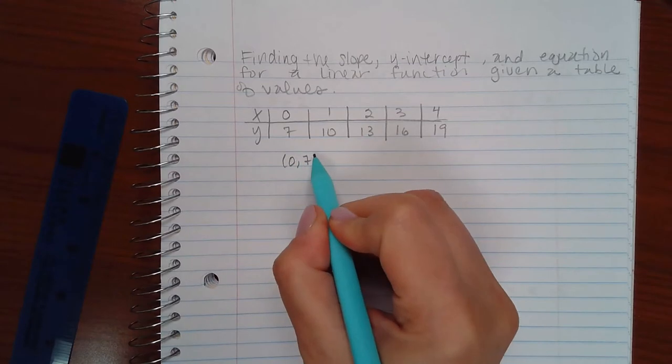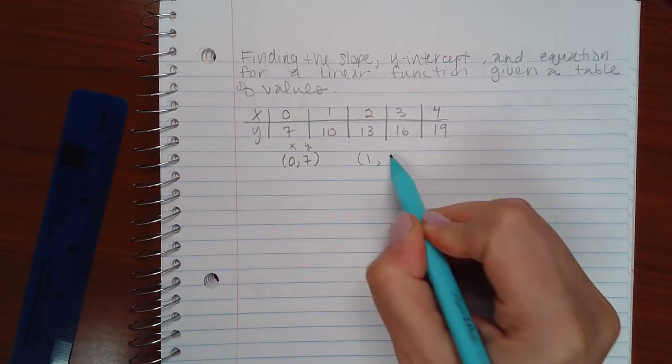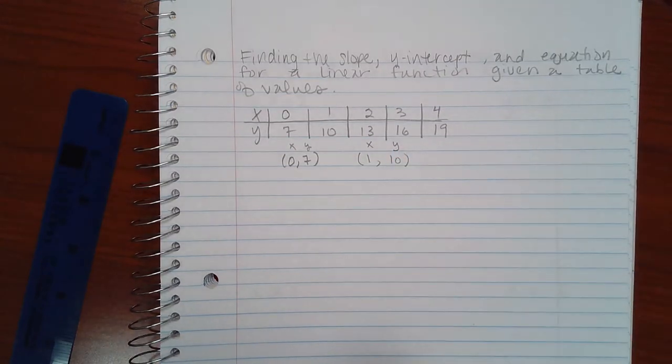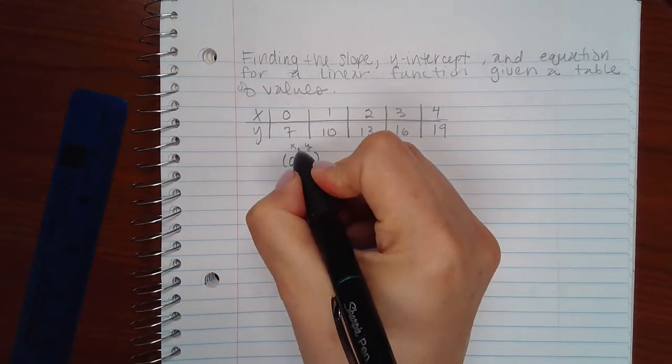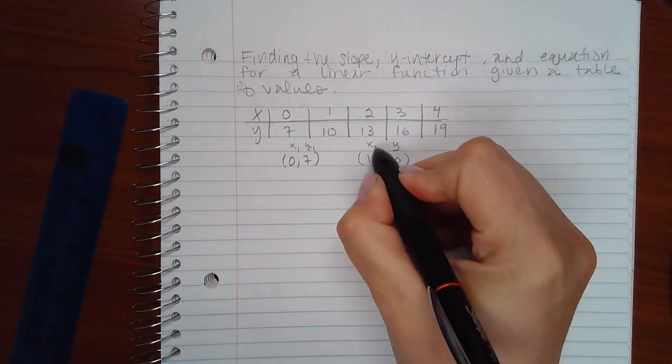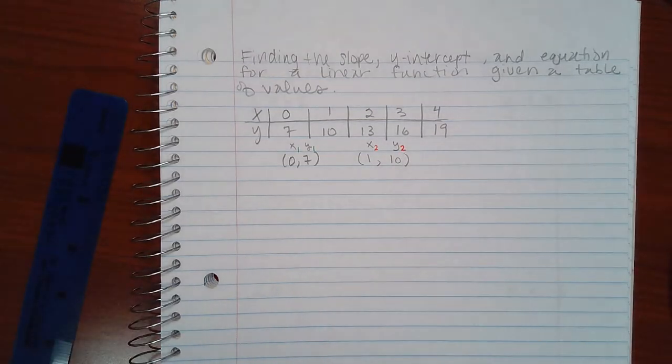So, I have zero comma seven. This is the x, this is the y. And then I have one comma ten. Again, this is the x and this is the y. And I label them. This is the x of the first point, this is the y of the first point. This is the x value of the second point, and this is the y value of the second point.